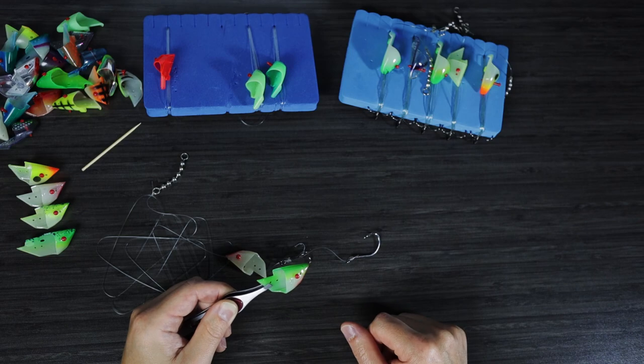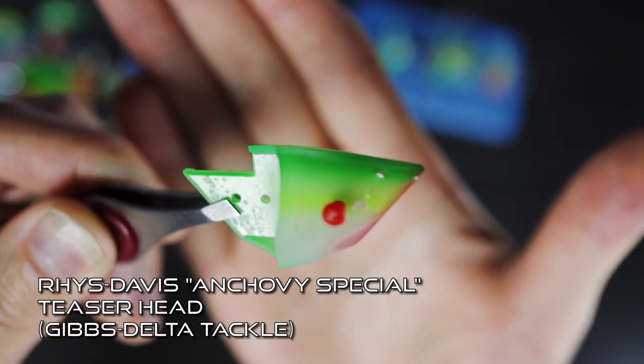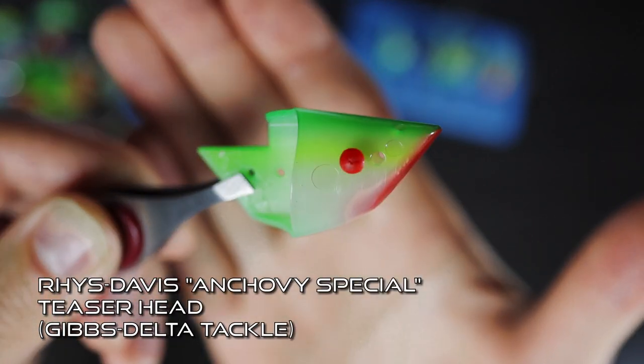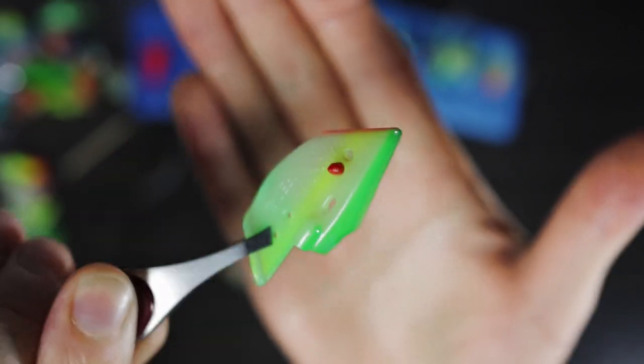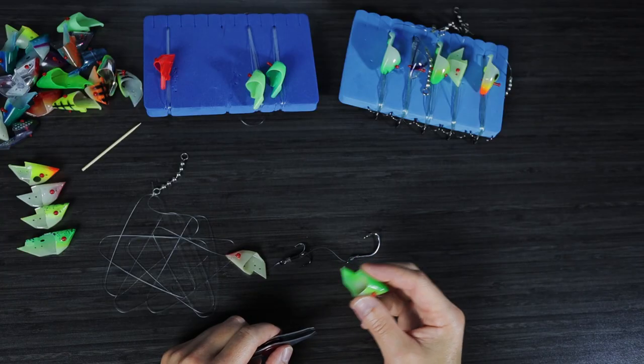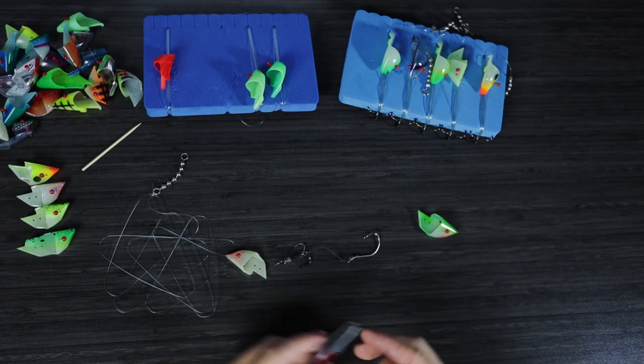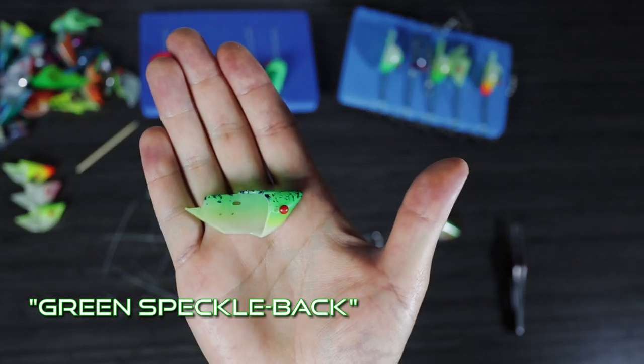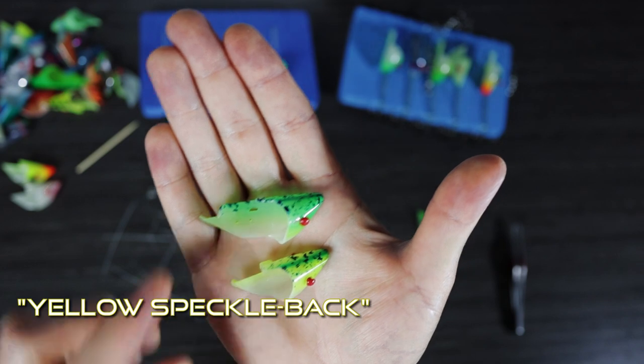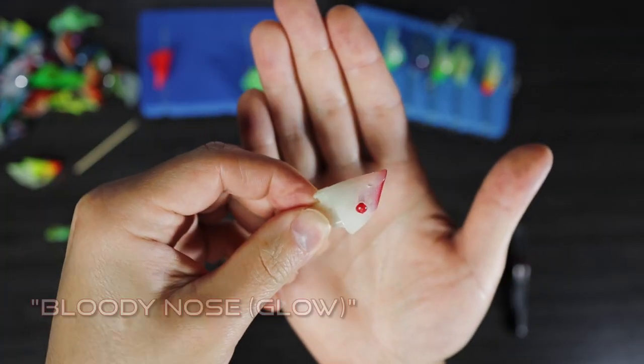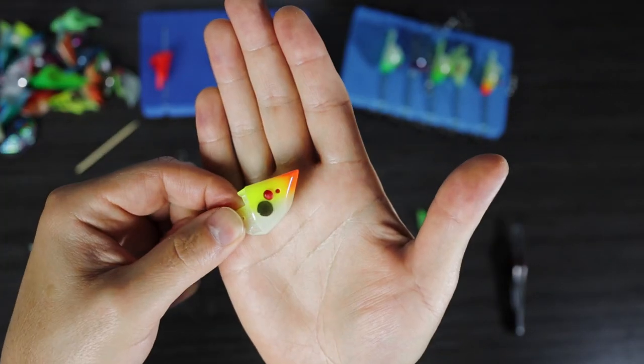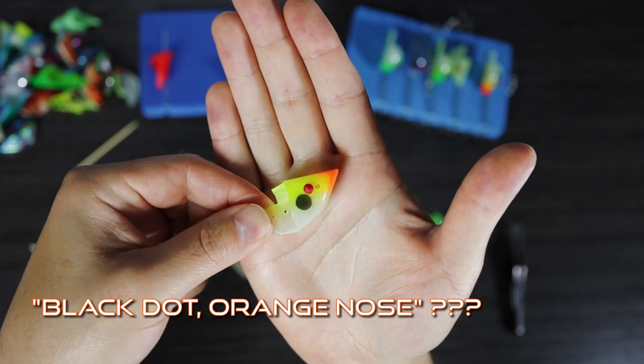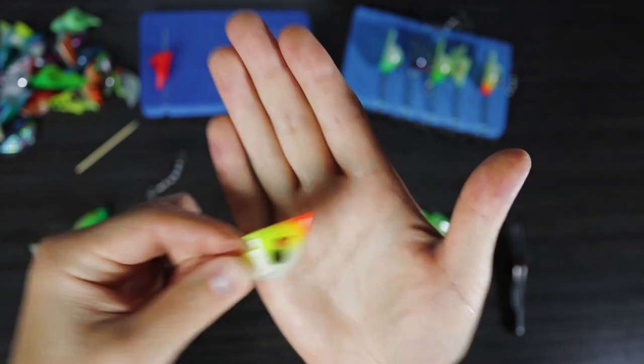So to start, this is the Rees-Davis Anchovy Teaser Head made by Gibbs Delta Tackle. I'm sure you guys have seen these before. For us, these four patterns over here are our go-tos. We've got the green speckleback or yellow speckleback and we've also got the glow bloody nose and the black dot orange nose we call it. Also a glow.